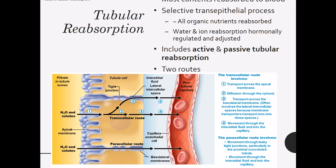There are two routes of transport through the membrane. There's the transcellular route, where something gets reabsorbed via a carrier protein or channel in the membrane, crosses the whole cell, into the interstitial spaces, and then into the peritubular capillaries surrounding the tubules. It could also travel via a paracellular route — meaning it goes between two cells of the tubules — typically something small enough to fit through those junctions.